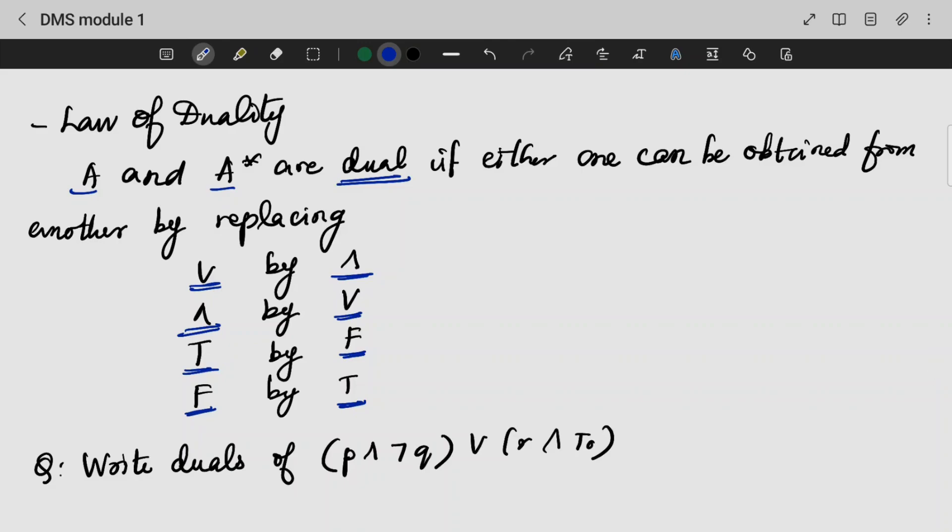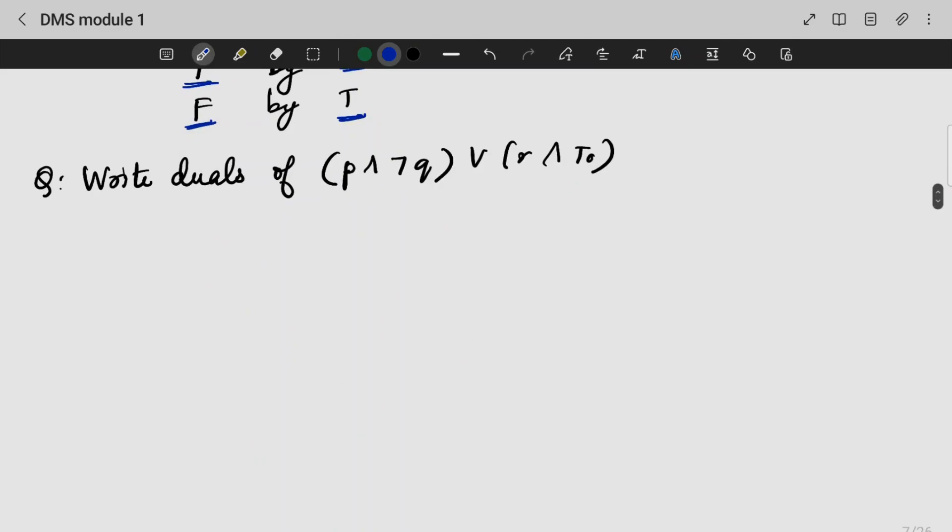Let us take the first question, how to perform the things. So, let us take that this is the equation given here. That is P OR (not Q) AND T.